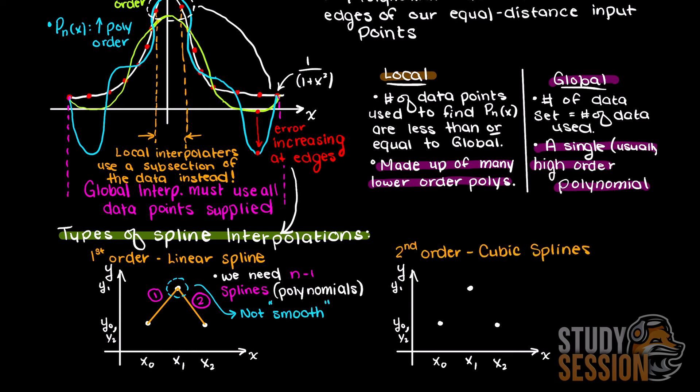Therefore, more commonly, we use what are called cubic splines, or second order splines, as they allow for both smooth and continuous functions that could look many different ways, such as the following.